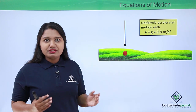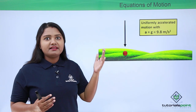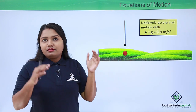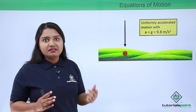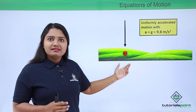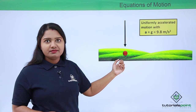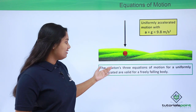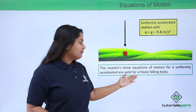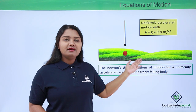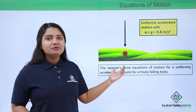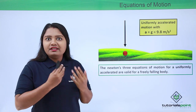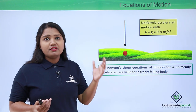We have a set of equations of motion which were specifically derived for uniformly accelerated motion. Since free fall is also uniformly accelerated motion, Newton's three equations of motion are valid for a freely falling body. We don't have to derive separate equations — the equations we already have can be used directly.